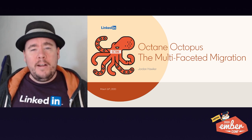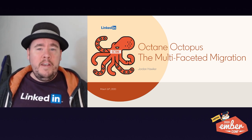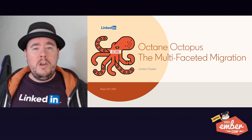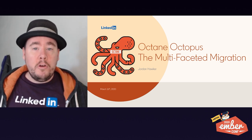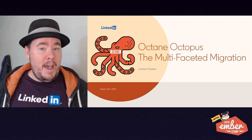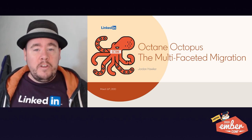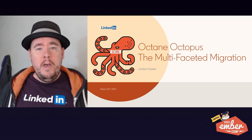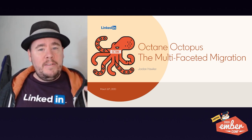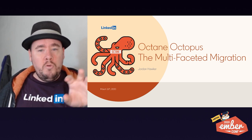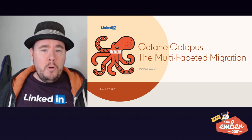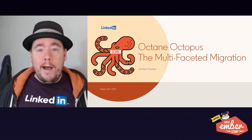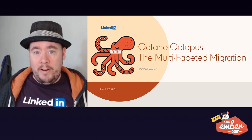When I talk about the Octane Octopus, what I'm referring to is this idea that because Octane represents so many new features being introduced into the Ember ecosystem, it's going to be a daunting task to migrate your existing code onto Octane itself. However, I'm here today to show you a migration path that not only breaks down the migration into individual cohesive steps, but also allows you and your team to stay productive building new features in Octane even before your existing code has finished migrating.